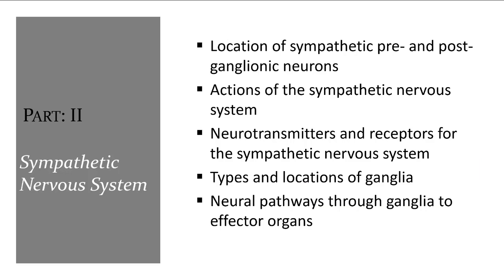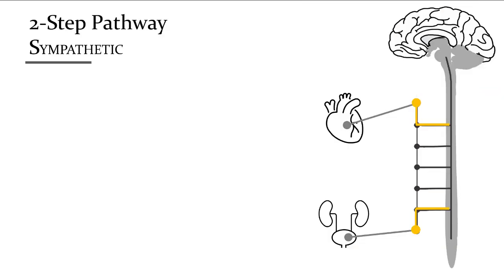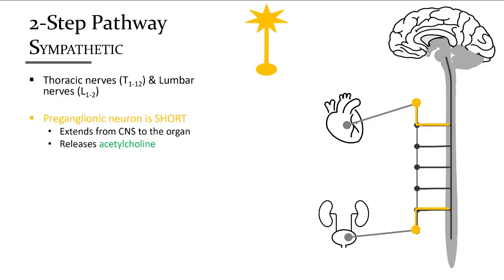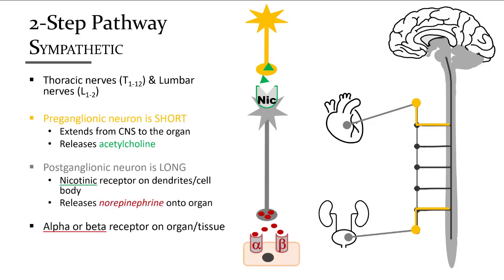Let's go into some of the specific details of the sympathetic nervous system. Recall they are thoracolumbar, utilizing all 12 thoracic nerves as well as the first two lumbar nerves. The sympathetic nervous system uses the two-step pathway: thoracolumbar nerves come off the spinal cord to a chain ganglia. The pre-ganglionic neuron from the spinal cord to the chain ganglia is relatively short and releases acetylcholine, which then binds to a nicotinic receptor, activating that second neuron that ultimately releases norepinephrine to an alpha or beta receptor at the organ or tissue.